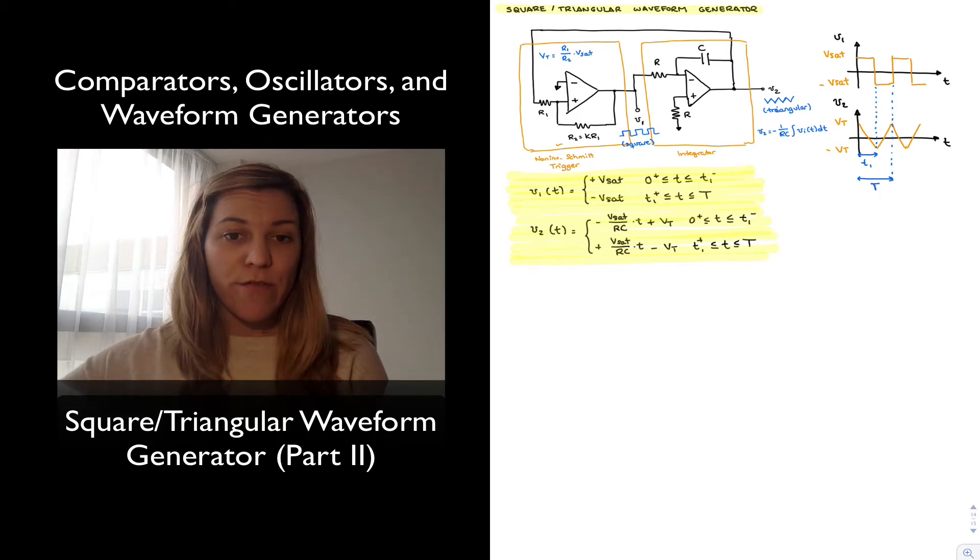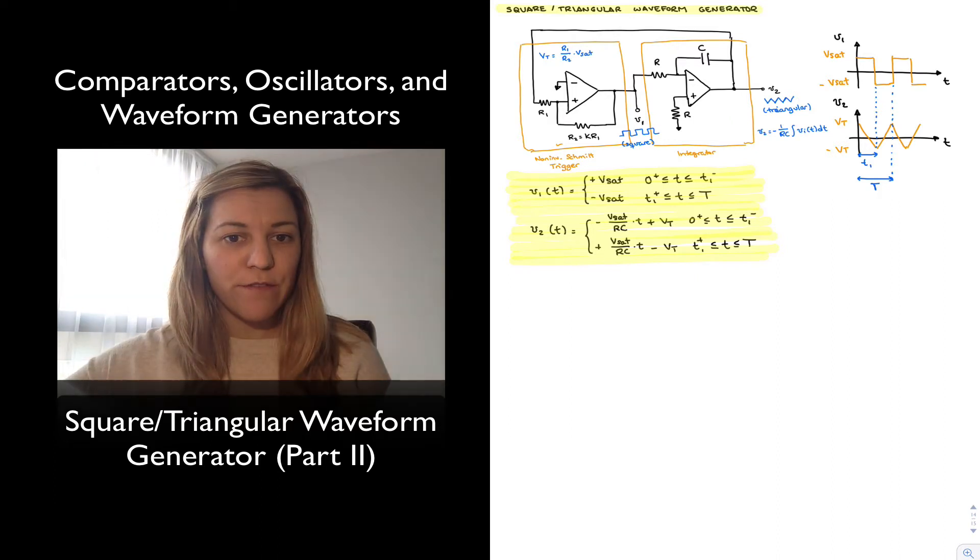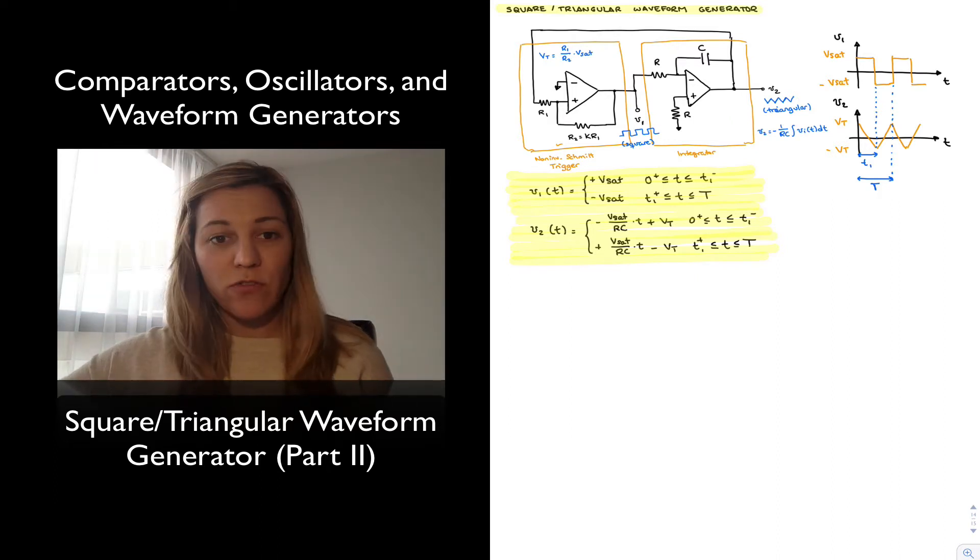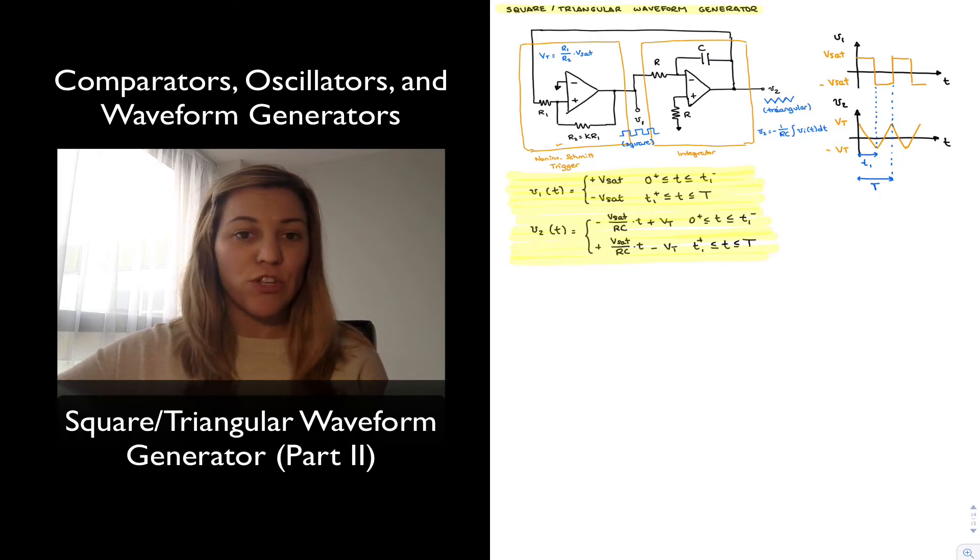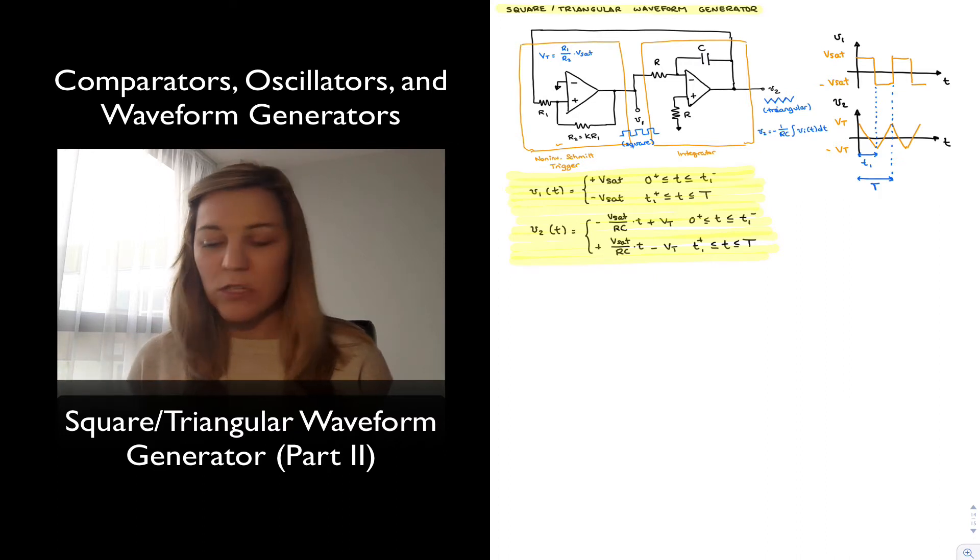Again, v1 is a square wave which oscillates between positive and negative saturation voltage vSat, and v2 is a triangular wave which oscillates between positive and negative vT, where vT is equal to vSat, the saturation voltage, times the ratio of R1 to R2, the two resistors within the non-inverting Schmitt trigger.